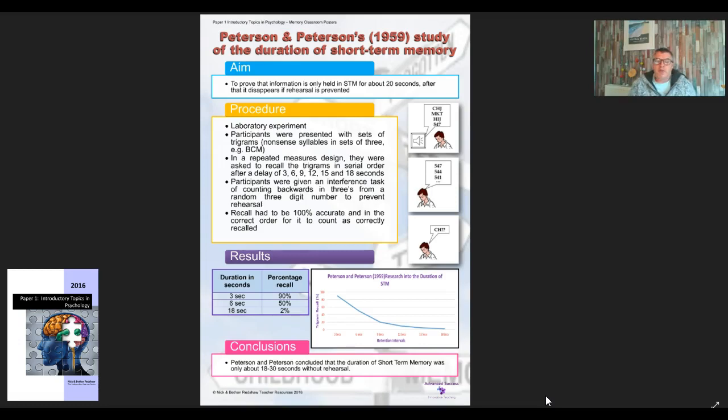They used a repeated measures design. They were asked to recall the trigrams in serial order after a delay of 3, 6, 9, 12, 15 and 18 seconds. Participants were given an interference task of counting backwards in threes from a random three-digit number to prevent rehearsal.